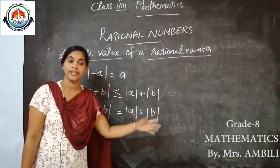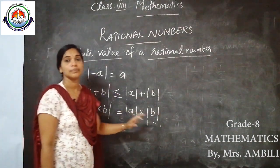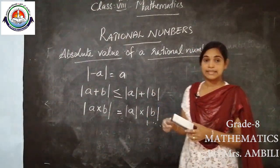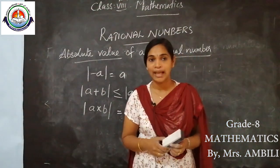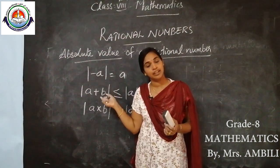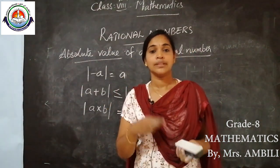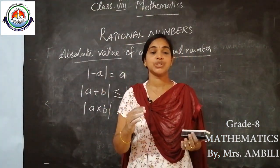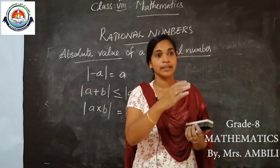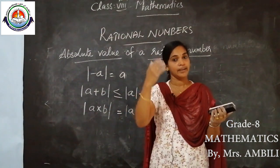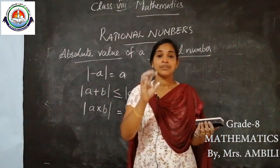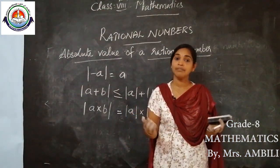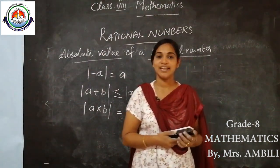Some verification questions are there — we need to verify by using examples, and we can discuss those next class. For homework, practice exercise 1.1. Write the chapter name neatly, the definition of rational number with examples, equivalent rational numbers, and standard form of a rational number. Try all questions in exercise 1.1, and if you have any doubts we can clear them later. Thank you, have a nice day.